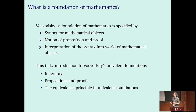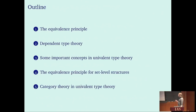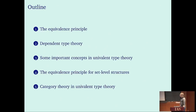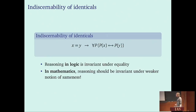Since this is supposed to be an introductory, tutorial-style talk, please feel free to interrupt me at any time. The outline: first, an intuition for what the equivalence principle is; second, dependent type theory as conceived by Per Martin-Löf in the 70s; third, concepts Vladimir added on top of dependent Martin-Löf type theory to turn it into univalent type theory; and fourth and fifth, the equivalence principle for set-level structures and then for more complicated mathematical structures.